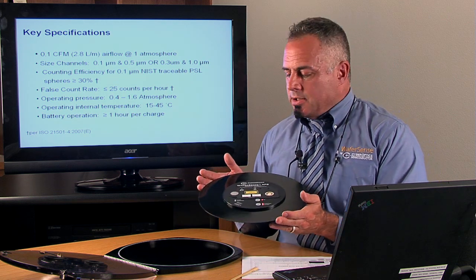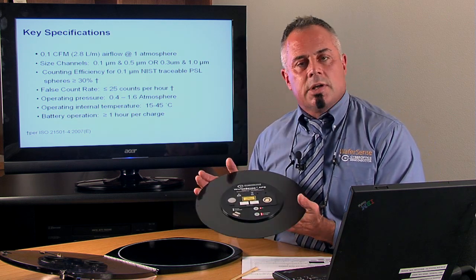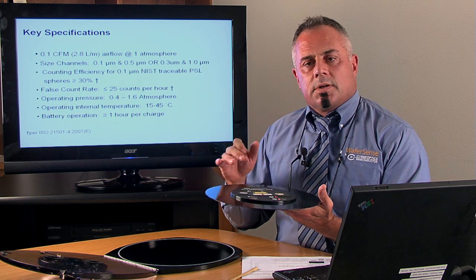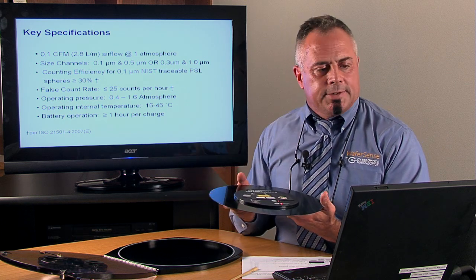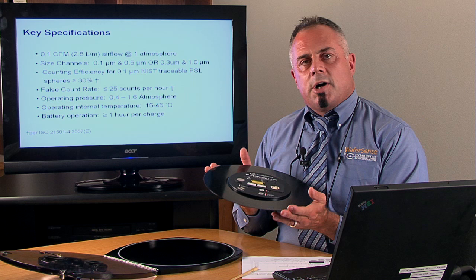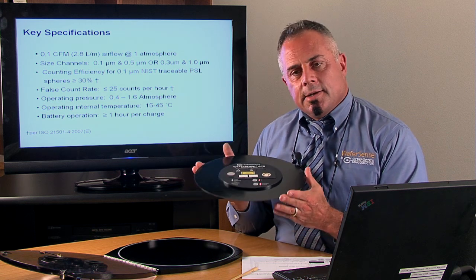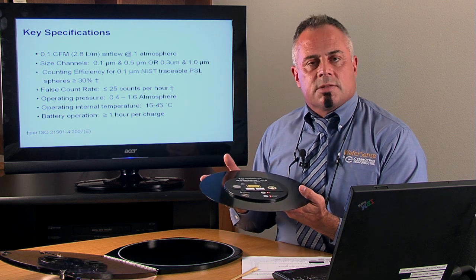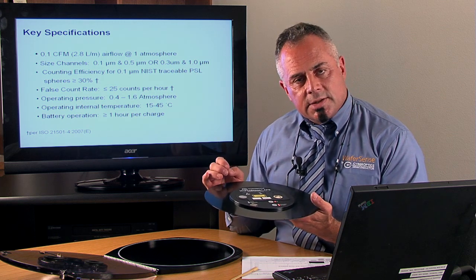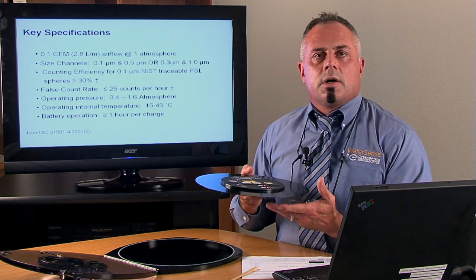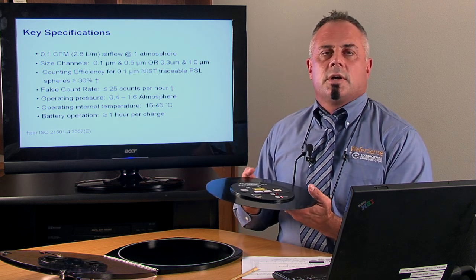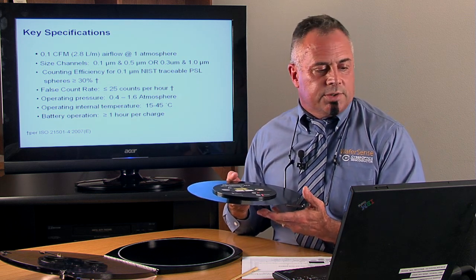Some of the specifications of APS include 0.1 cubic foot flow rate per minute. We have two models of APS. The standard model, the most popular model I should say, is 0.1 bins and 0.5 particle bin sizes. And also we have one 0.3 and 1 micron bin sizes.